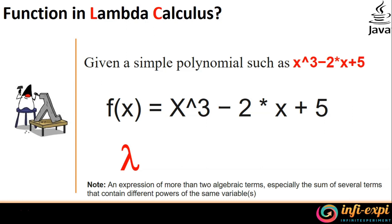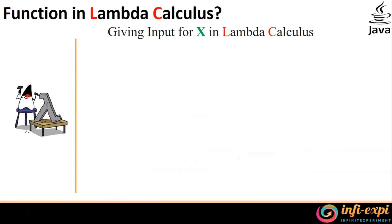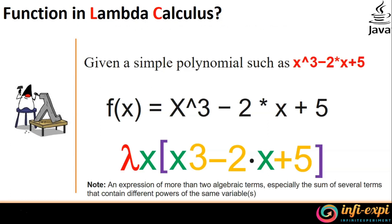We bring up the Lambda symbol, and then X denotes the parameter. Then expanding it — since it's a bigger expression — we start with square brackets and refer to x to the power of 3, minus 2 into x plus 5, then close the square bracket. This gives another form of Lambda Calculus expression. This can be taken for further manipulations. In the next slide, I'm going to provide the input for that X. We need to offer a real-time value for the X parameter and see how the expression produces an output.